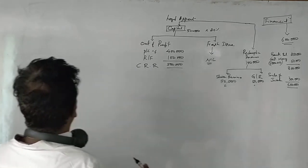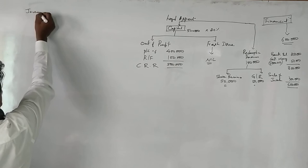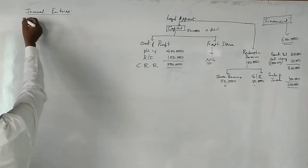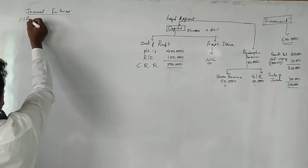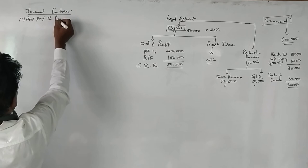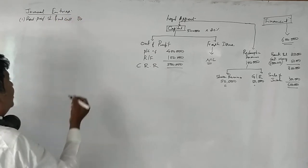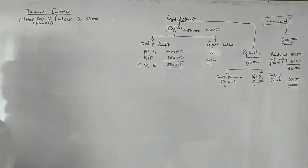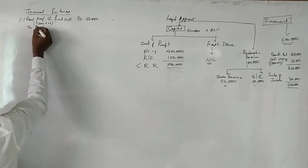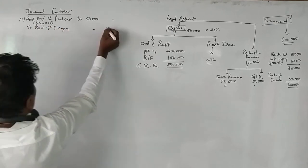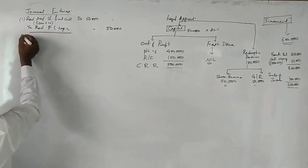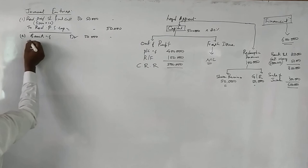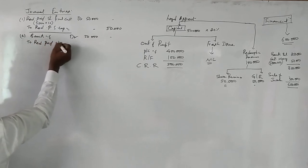The journal entry for final call money: Redeemable Preference Share Final Call Account Debit 50,000 (5,000 shares × 10 rupees) — To Redeemable Preference Share Capital Account 50,000. Second entry: Bank Account Debit 50,000 — To Redeemable Preference Share Final Call Account 50,000.